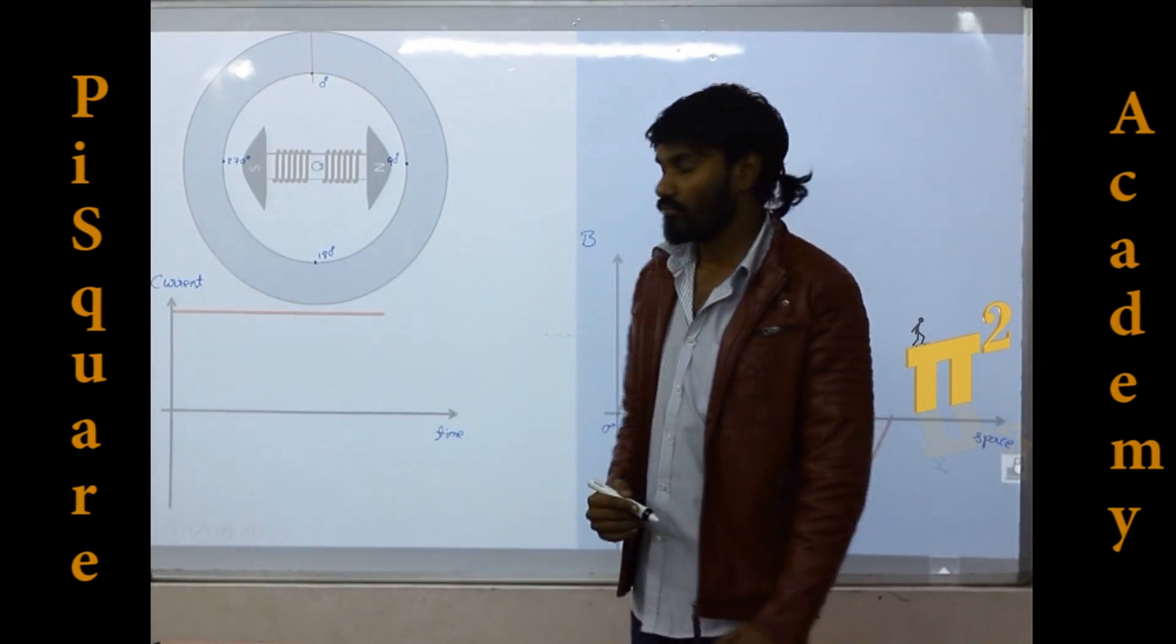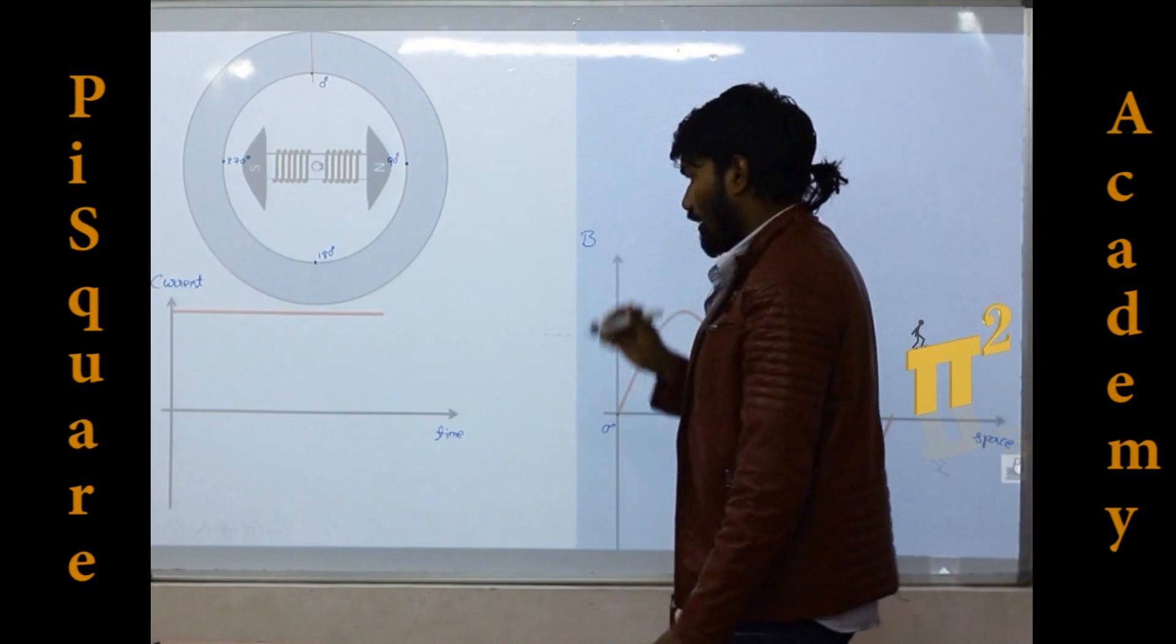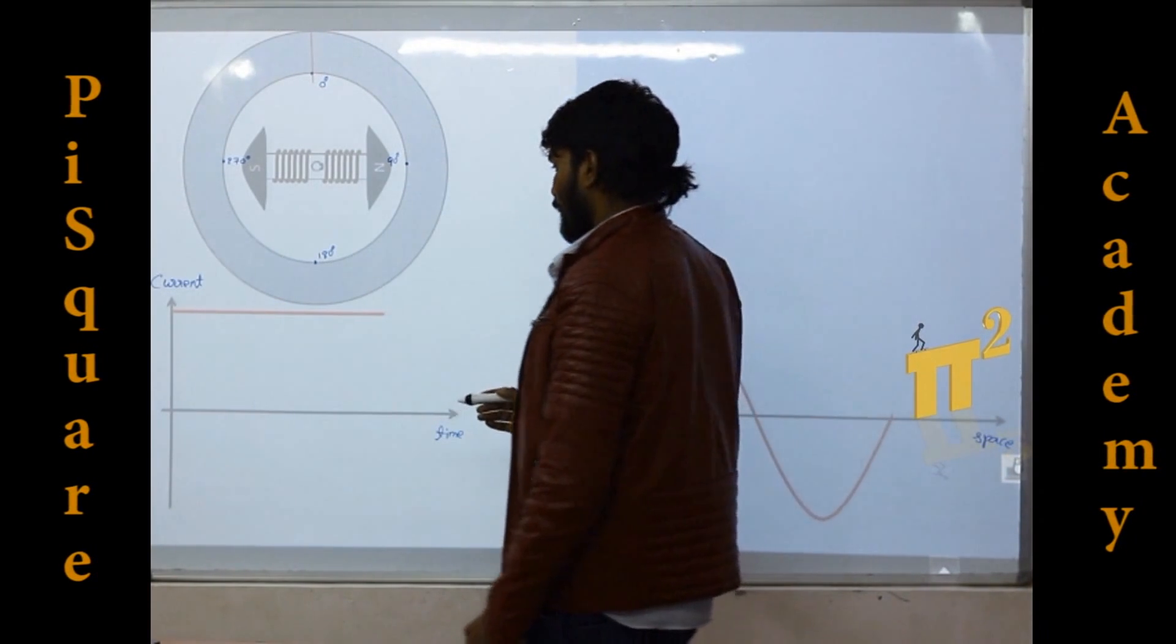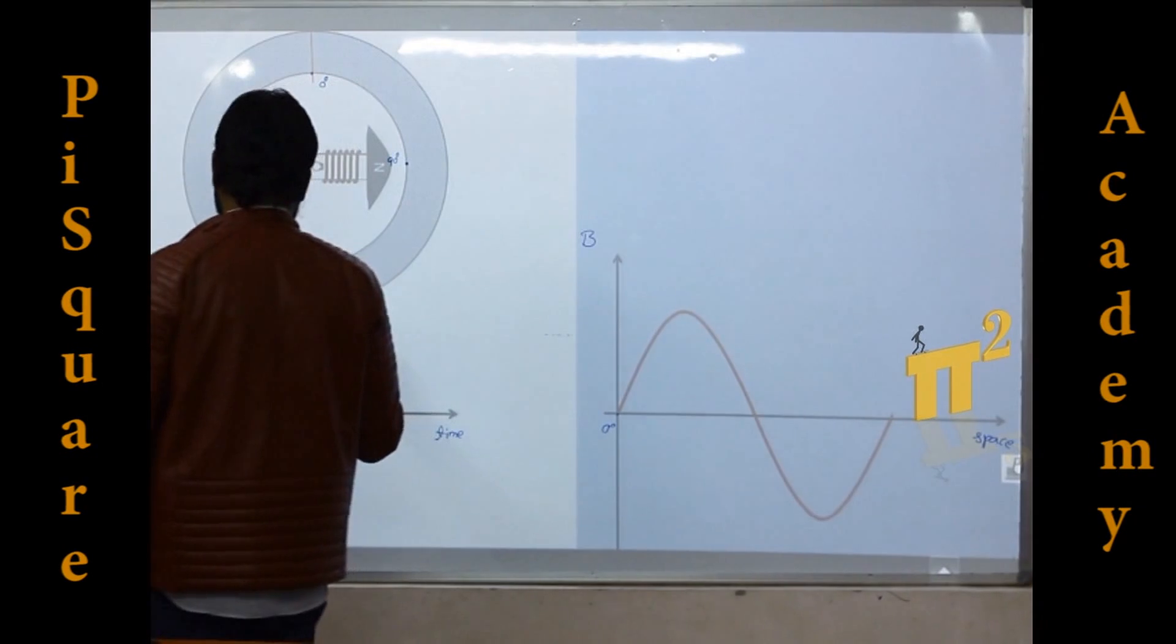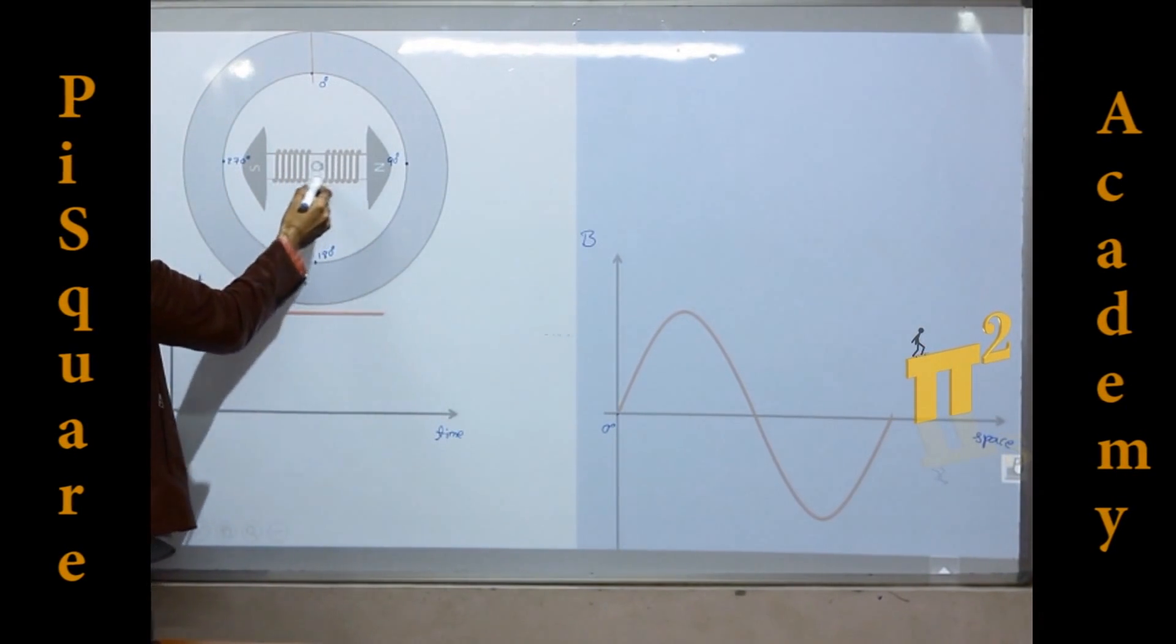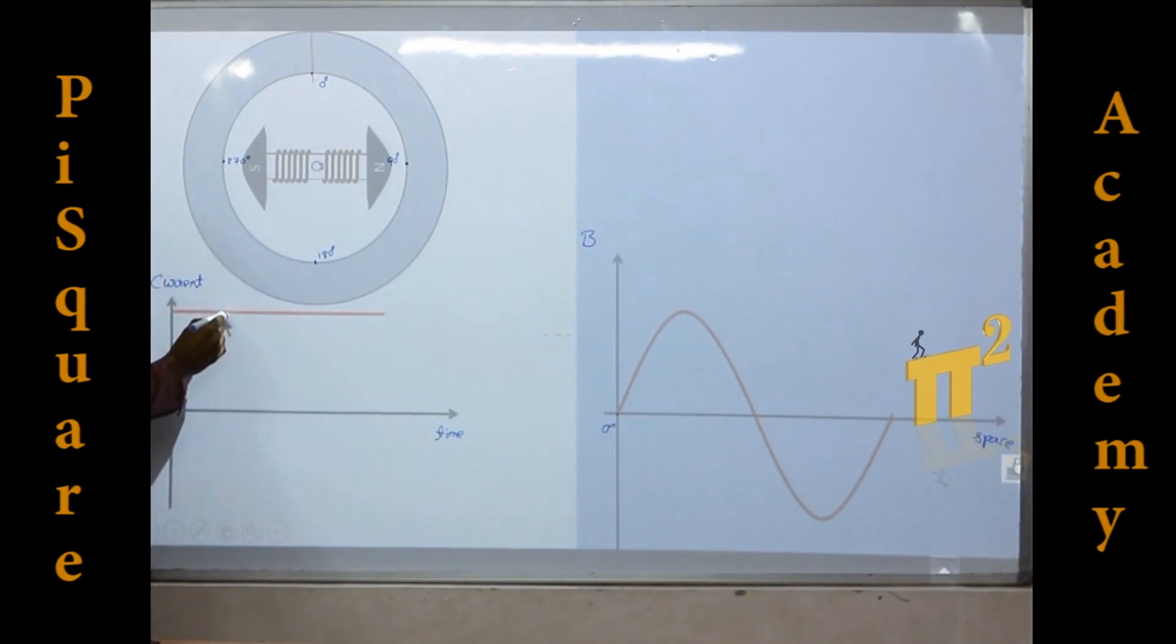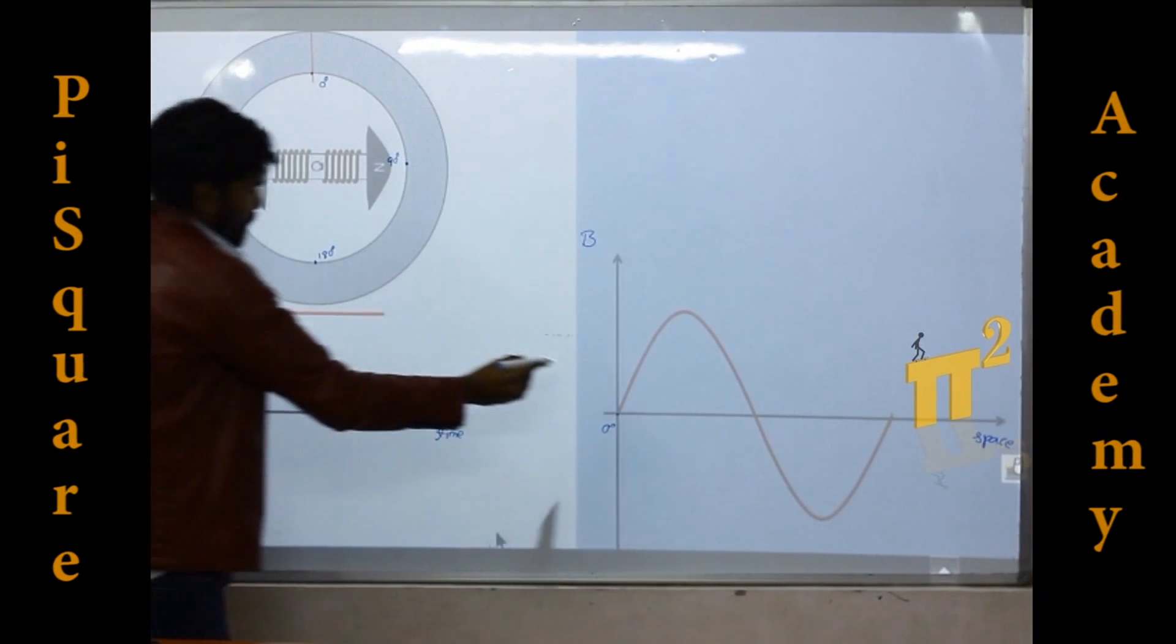Now if the magnitude of the current, now I reduce the magnitude of the current, then what will happen to the flux density?